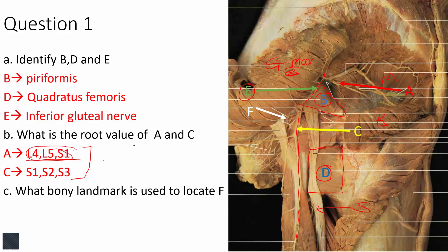Structure F refers to structures which emerge from the infrapiriformic compartment and immediately exit the gluteal region to enter the pudendal canal. Those structures are the pudendal nerve and the internal pudendal vessels. The bony landmark used to locate the pudendal nerve is the ischial spine.